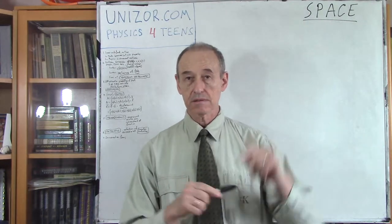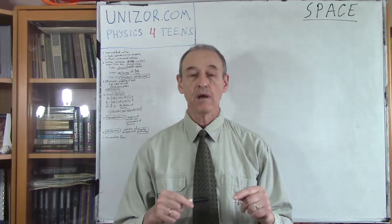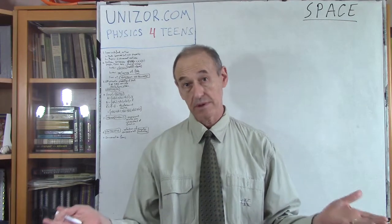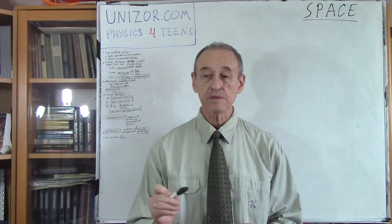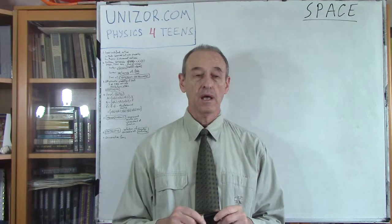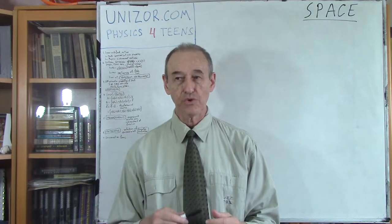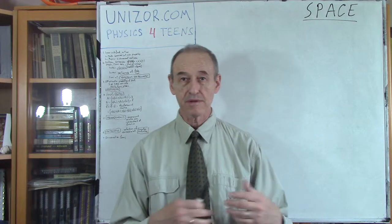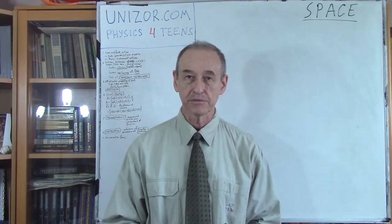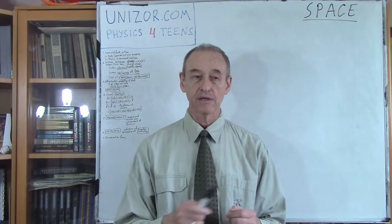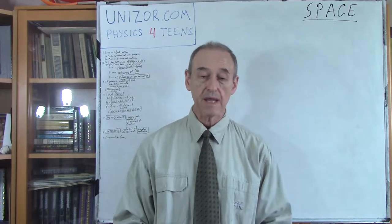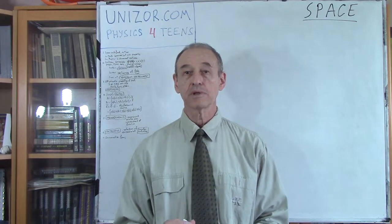We will most likely use the Cartesian system, which implies we need a special point as the origin, three axes — x-axis, y-axis, and z-axis — mutually perpendicular to each other. We also need a unit of measurement of the distance along each axis, which is something we should talk about more in terms of physics rather than mathematics, because in physics there are certain standards. The most important standard as the unit of measurement is a meter.